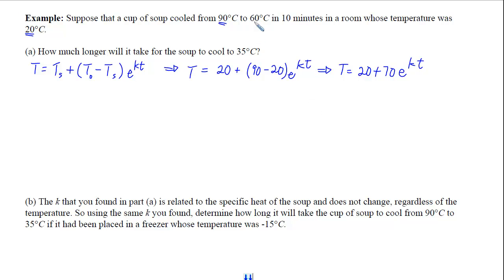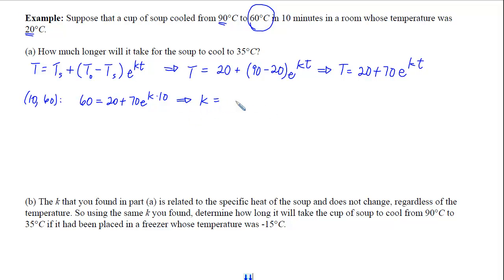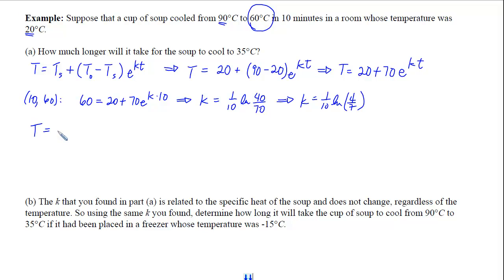Using the other piece of information—60 degrees at 10 minutes—that's a point on the temperature curve: when time is 10, temperature is 60. Plugging in gives 60 equals 20 plus 70 times e to the 10k. Subtracting 20 gives 40, dividing by 70, taking the natural log of both sides, then dividing by 10, we find k equals one-tenth times ln(4/7). We now have a complete formula: temperature at any time equals 20 plus 70 times e to the quantity one-tenth ln(4/7) times t, with t written in front so it's not inside the log.